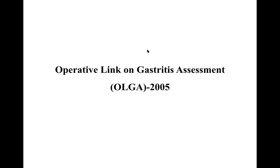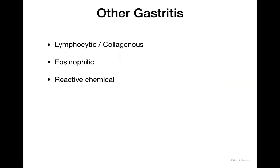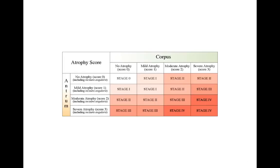A word about the OLGA — the Operative Link on Gastritis Assessment — given in 2005. This system is done to give risk stratification for cancer. You look for the atrophy score in the antrum and corpus, graded as mild, moderate, or severe separately. Then depending on the combined rate for corpus and antrum, you assign a stage. For example, mild atrophy in both antrum and corpus is Stage 1. Stage 1 disease has a low risk of cancer progression as opposed to disease at Stage 3 or 4.